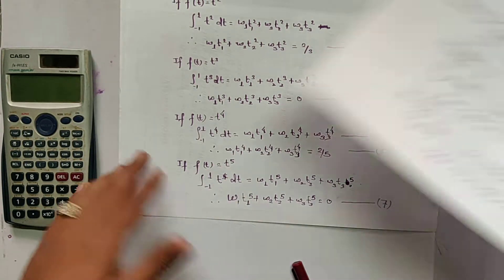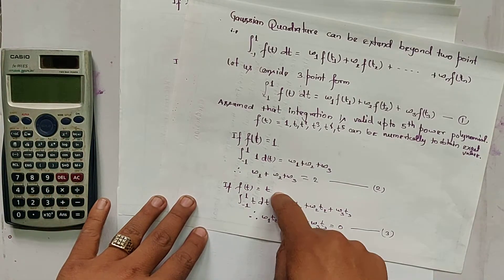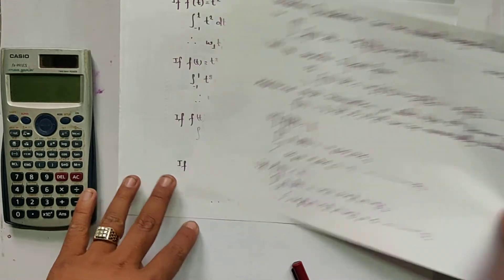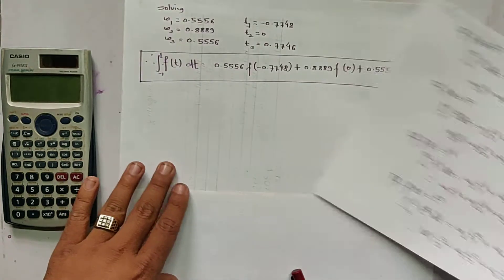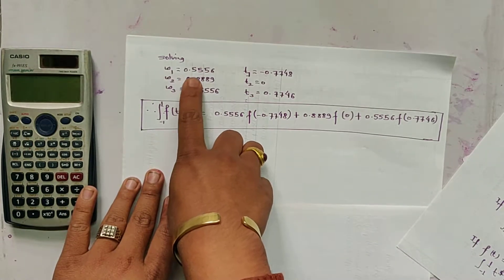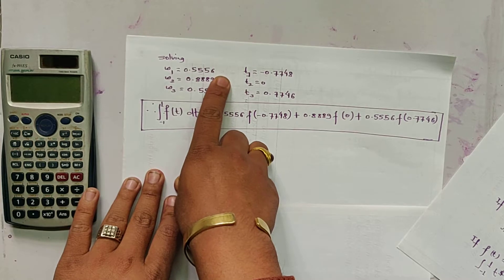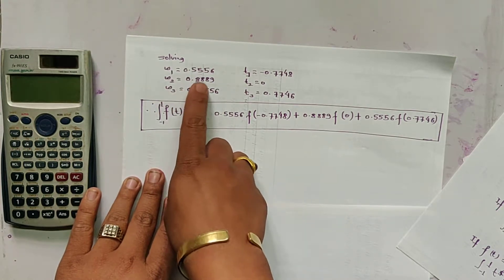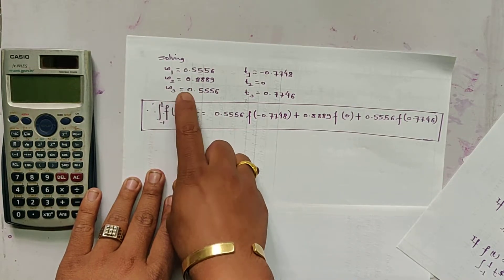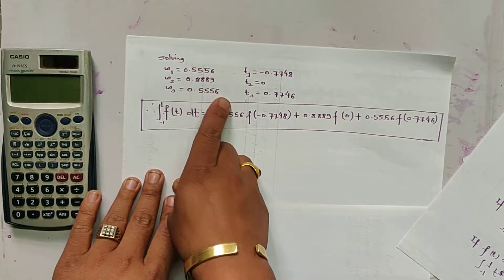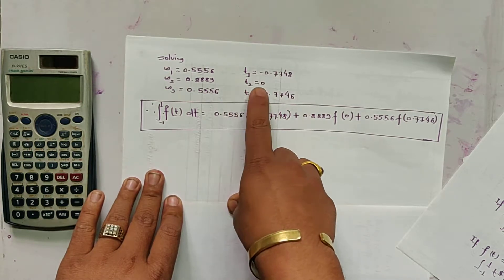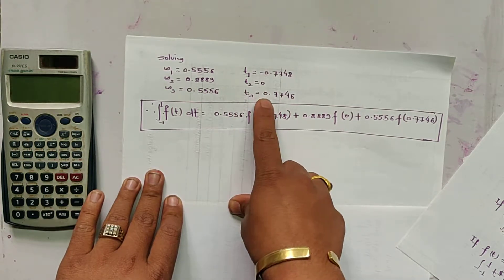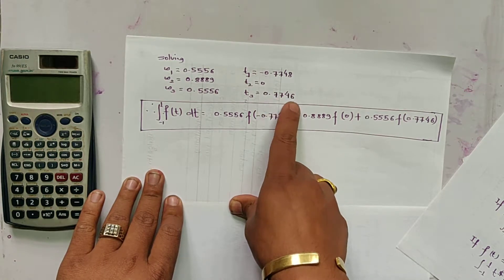Similar to the previous process, by solving these equations we get the values of w1, w2, w3, t1, t2, and t3. By solving these equations, we get: w1 = 0.5556, w2 = 0.8889, w3 = 0.5556, t1 = −0.7746, t2 = 0, and t3 = 0.7746.